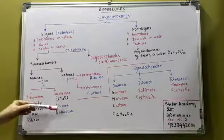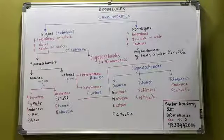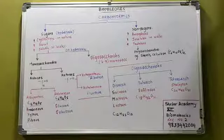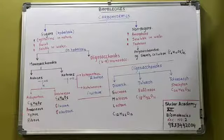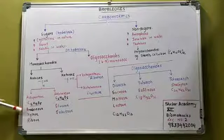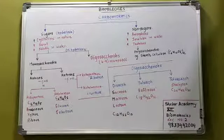Aldo hexose: six carbon atoms and the functional group is aldehyde. The examples are glucose and galactose — remember as 'GG'. For the aldo pentoses, remember the mnemonic AXR: arabinose, xylose, ribose.